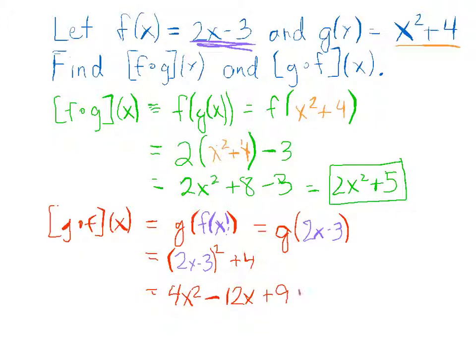And don't forget your last 4 here, plus 4. So then your final answer is 4x squared minus 12x plus 13.